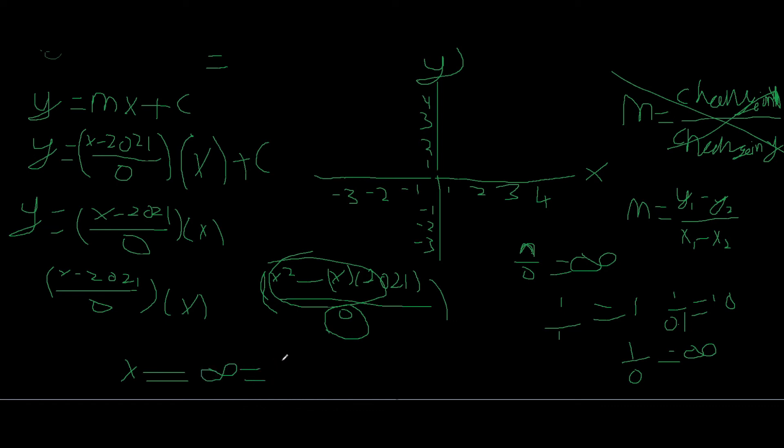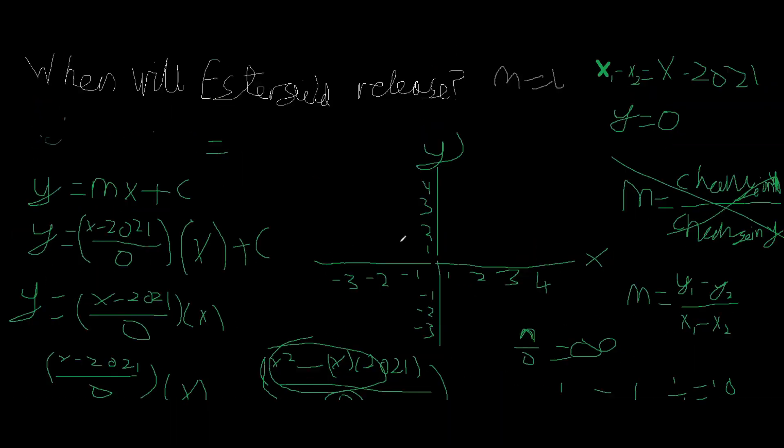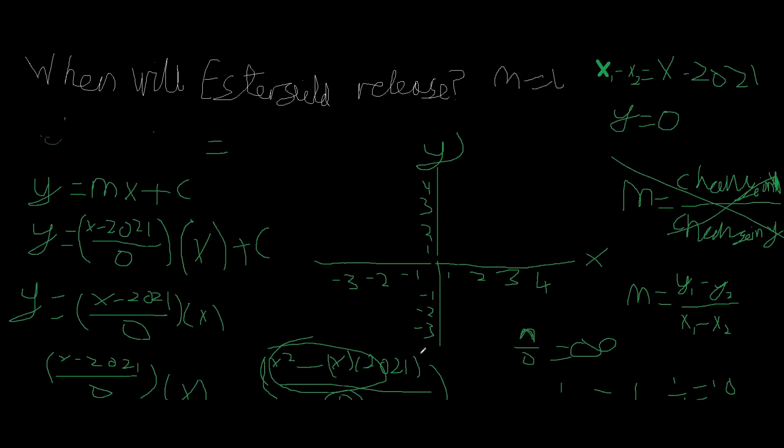And therefore this means that Esterfield will never release. This means we can actually plot it down on the graph here. Because it's an x equals zero line, it will come all the way down from here, and then it will turn and go all the way, and then it will come back up again.